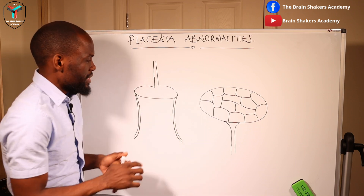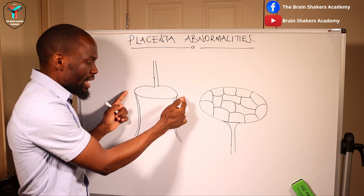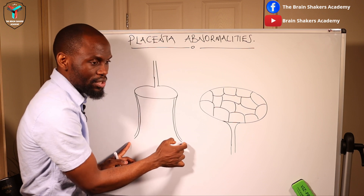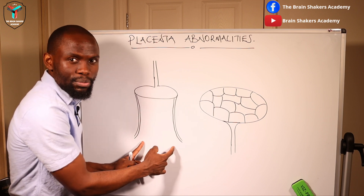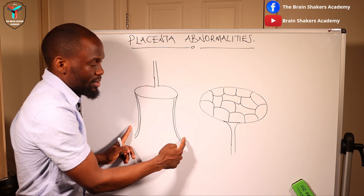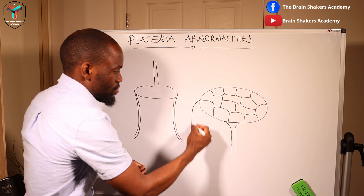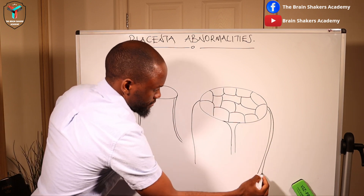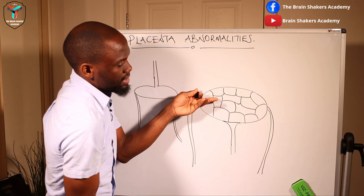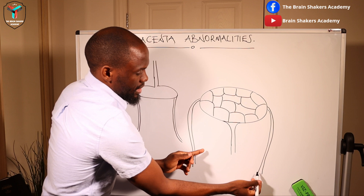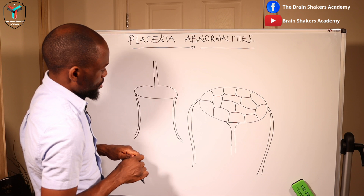Looking at this first diagram, you'll notice the umbilical cord, the placenta, and the membranes coming down — the amnion and the chorion. The one on the inner part, closer to the maternal surface, is going to be the chorion, and the one on the outer side is the amnion. So what is attached closer to the maternal surface is the chorion, and then in the inner part you have the amnion and the umbilical cord.